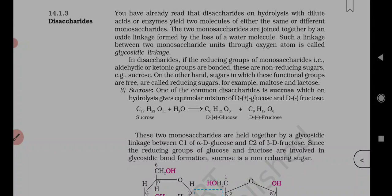Another disaccharide is maltose, which is composed of two alpha-D-glucose units in which C1 of one glucose is linked to C4 of another glucose. The free aldehydic group can be produced at C1 of the second glucose in solution, and it shows reducing properties. Therefore, maltose is a reducing sugar.